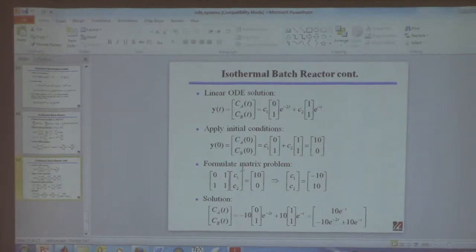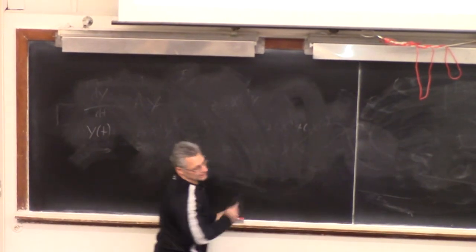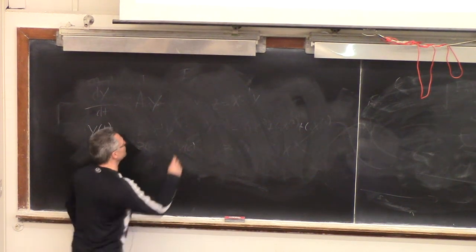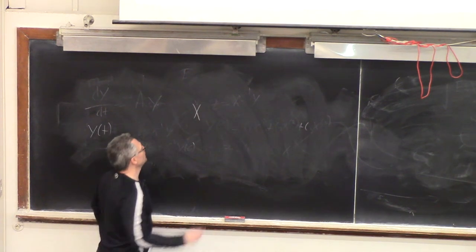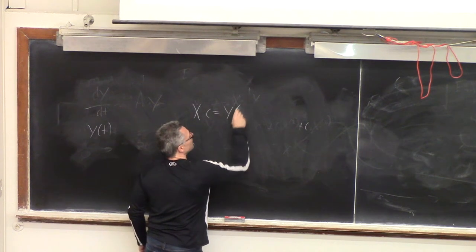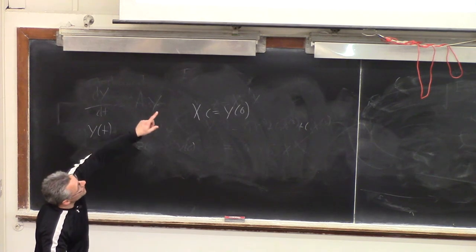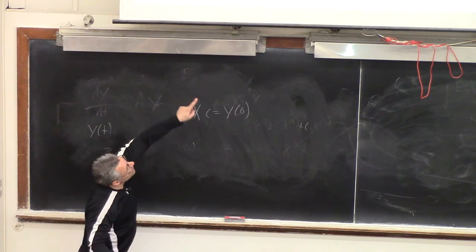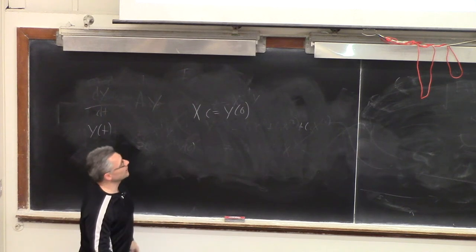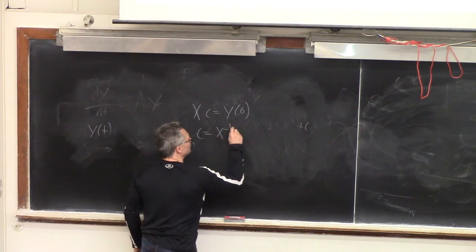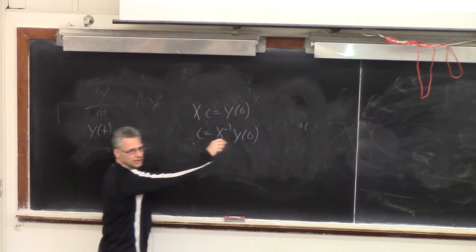The equation says X — the modal matrix with eigenvectors as columns — times the vector C equals Y of zero. For this equation, X is the matrix I showed you, and the right-hand side is the initial condition. That means you can find the constants like this: C equals X inverse times Y zero.